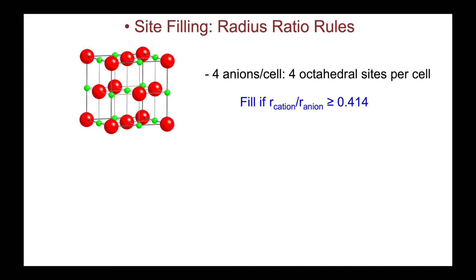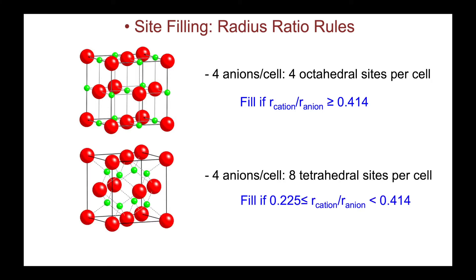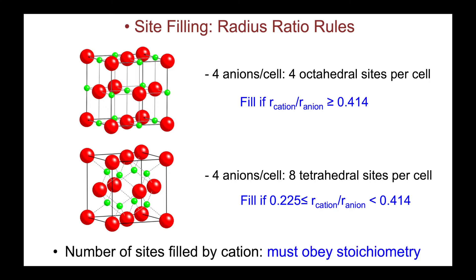When we fill the sites, we do so in accordance with the radius ratio rules, but we also have to think about how many of those positions are filled — this is guided by the stoichiometry of the compound. We'll fill octahedral holes if the radius ratio is 0.414 or greater, and tetrahedral holes are expected to be occupied by a cation with a radius ratio between 0.225 and 0.414. How many of these positions are filled is dictated by the stoichiometry of the compound.